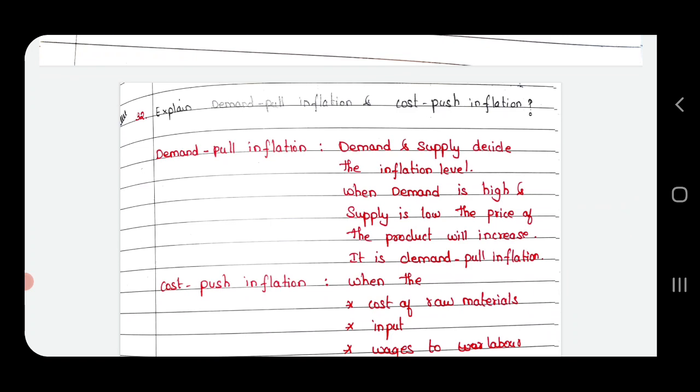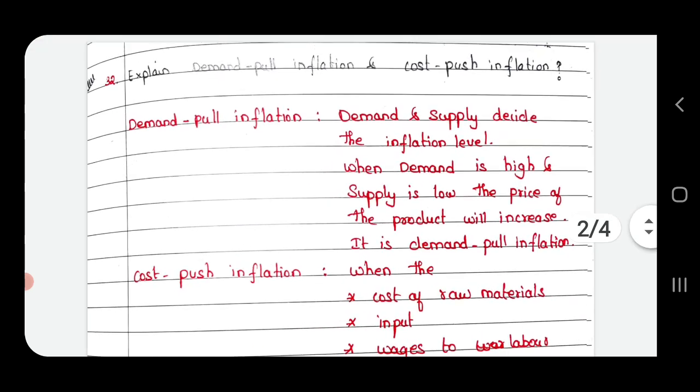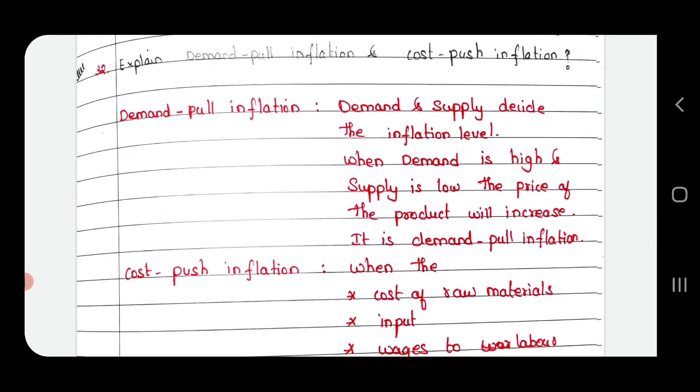Question 32: Explain demand pull inflation and cost pull inflation. Demand pull inflation: Demand and supply decide the inflation level. When demand is high and supply is low, the price of the product will increase. It is demand pull inflation.